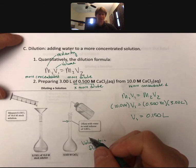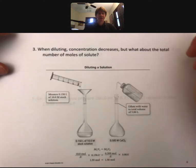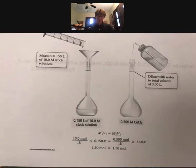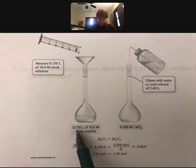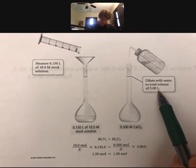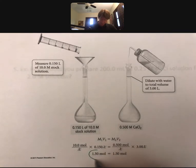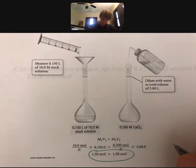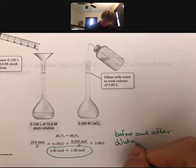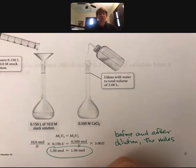Dilution is just adding water to something you've already got. When diluting, concentration decreases. But what about the total number of moles of solute? Here you've got 0.150 liters of 10.0 molar stock solution, and here you've got 0.5 molarity times 3 liters. What we're showing here is that before and after dilution, the moles are the same. Before and after dilution, the moles of solute are the same.